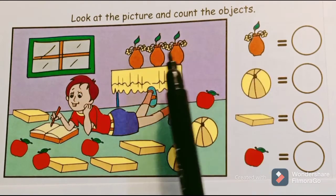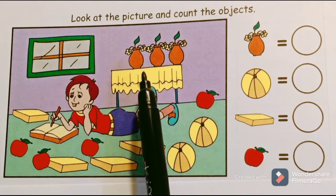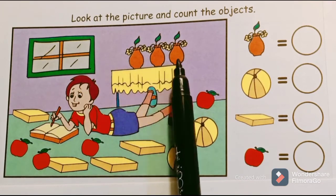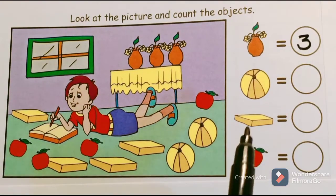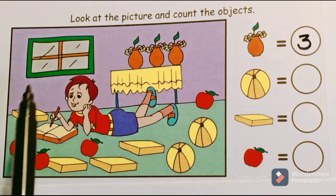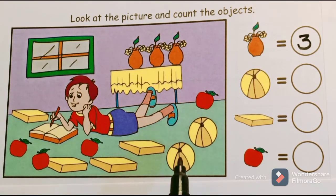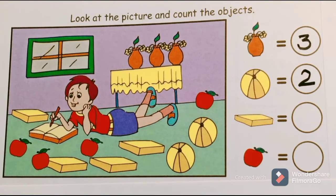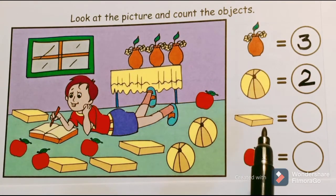What is the first object? It is a flower vase. How many are there? One, two, three — there are three vases. What is the next object? It is a ball. How many balls? One, two — there are only two balls.